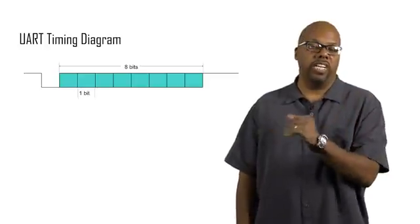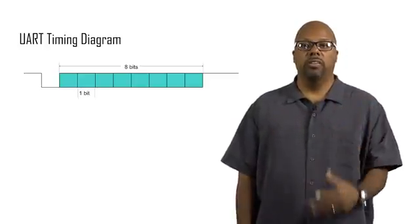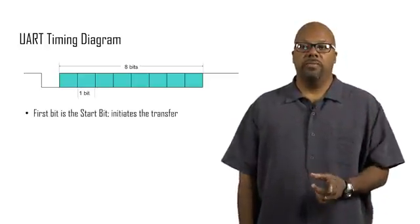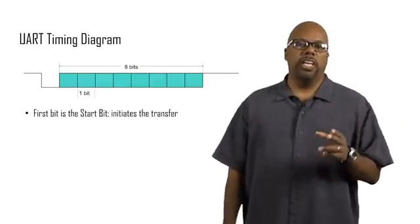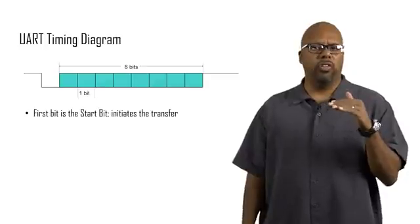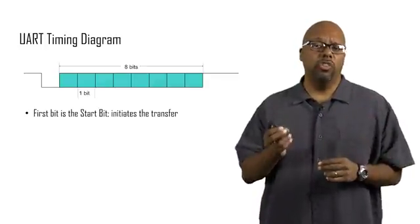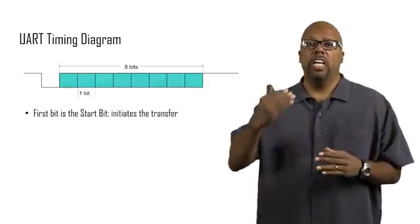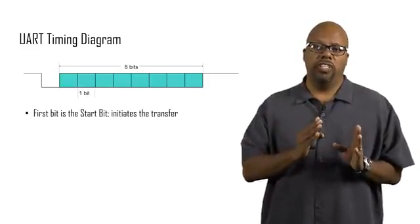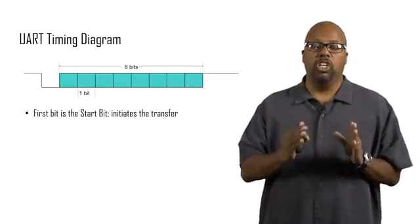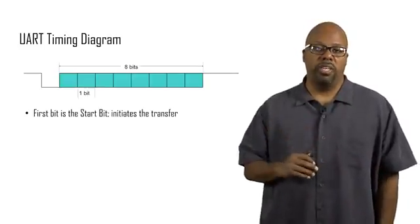So let's break down this communication. This is an example of sending one byte of data via UART. So the first bit is the start bit, and that initiates the transfer. So the start bit is that first bit where it starts off high by default. But as soon as you want to start sending some data, it goes low. So you can see that first bit, that first chunk of time there, it's low for one chunk of time. That is the start bit.